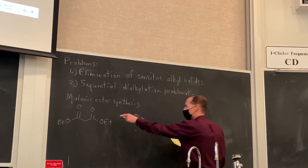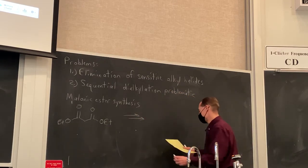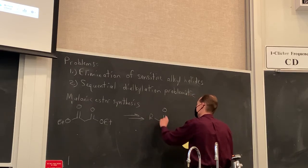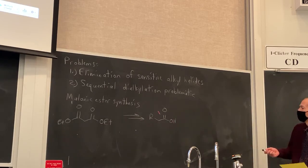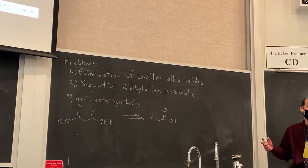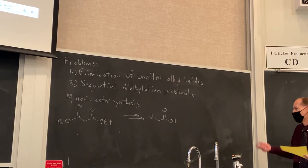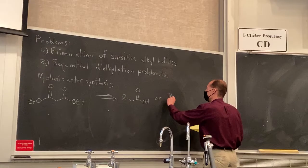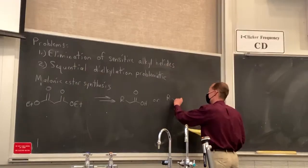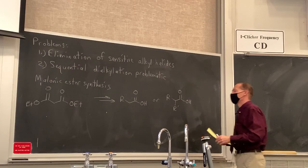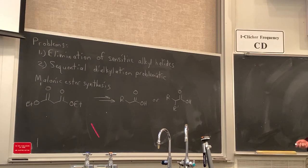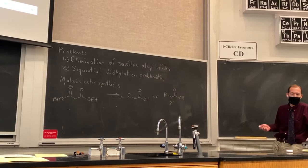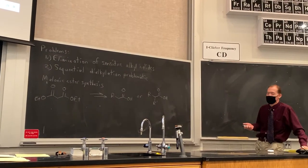Through a sequence of reactions, we can convert malonic ester into a molecule that is an alkylated version of acetic acid — like performing an alkylation on an enolate of acetic acid. Or we could attach two alkyl groups, which could be the same or different. Over the course of a few steps, we take our malonic ester, form carbon-carbon bonds between the alpha carbon and primary alkyl halides, and generate products of this type.